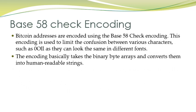Bitcoin addresses are encoded using Base-58 Check encoding. This encoding is used to limit confusion between various characters — for example, because of different fonts, 0 and O may look similar, and 1 and Roman I may look the same. This encoding scheme basically takes binary byte arrays and converts them into human-readable strings. The address is generated from the public key, and then the hash function is used twice: first SHA-256, then RIPEMD-160.